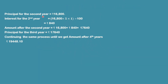The principal for the second year is the first year amount, that is 16,800. Interest for the second year is 16,800 × 5 × 1 ÷ 100, which equals 840. Amount after the second year is P plus I, equal to 17,640. The principal for the third year is the second year amount, 17,640. Continuing the same process until the 4th year gives a final amount of 19,448.10.